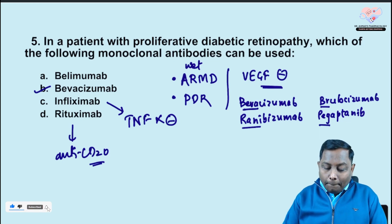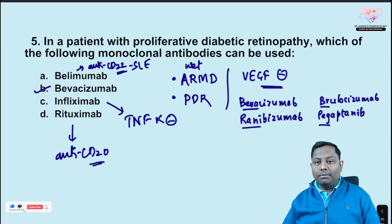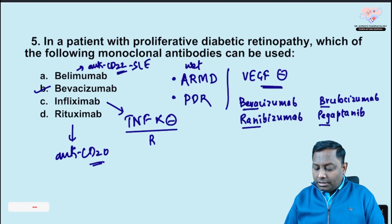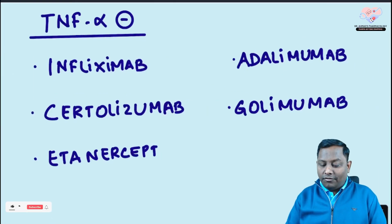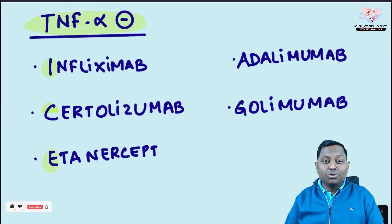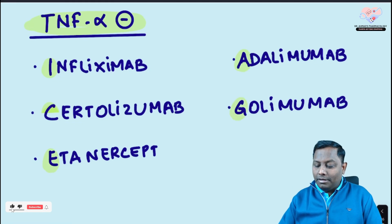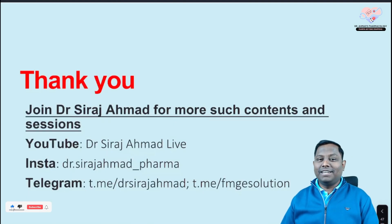Belimumab is an anti-CD22 agent that inhibits B-cell activation and is used in SLE. Rituximab has many uses: CLL, rheumatoid arthritis, ITP, non-Hodgkin's lymphoma, autoimmune hemolytic anemia. TNF-alpha inhibitors like infliximab are used in rheumatoid arthritis and inflammatory bowel diseases. A mnemonic for TNF-alpha inhibitors is 'ICE and AAG' — easy to remember.